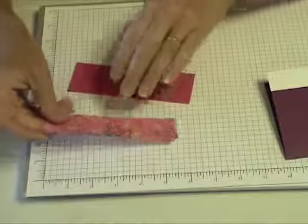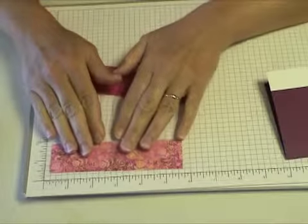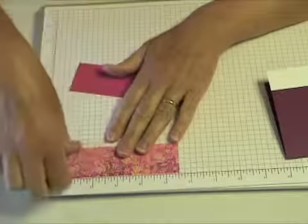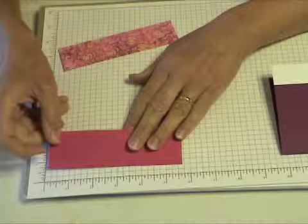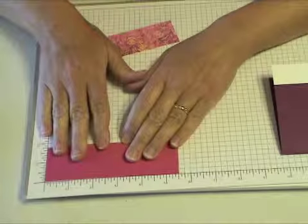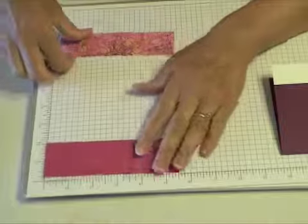Then, from our Designer Series Paper Razzleberry Lemonade, I'm going to use some of this print 1 1/2 by 5 1/2 inches and then the coordinating cardstock of Melon Mambo, that'll be 1 1/3 by 5 1/2 inches.